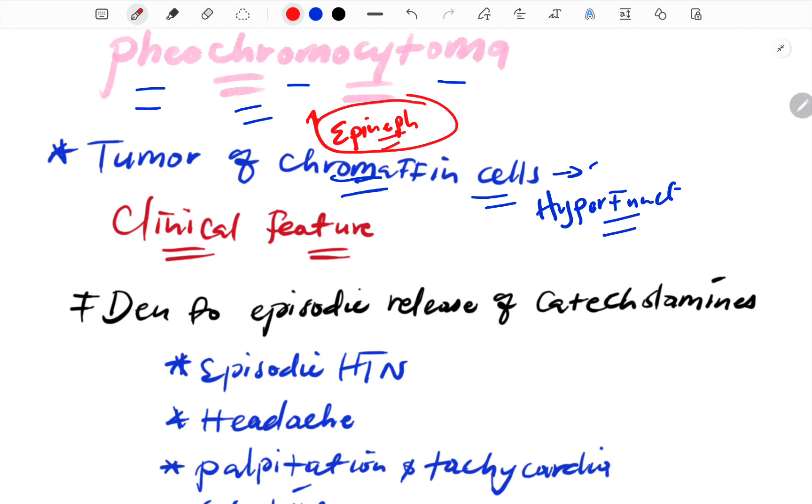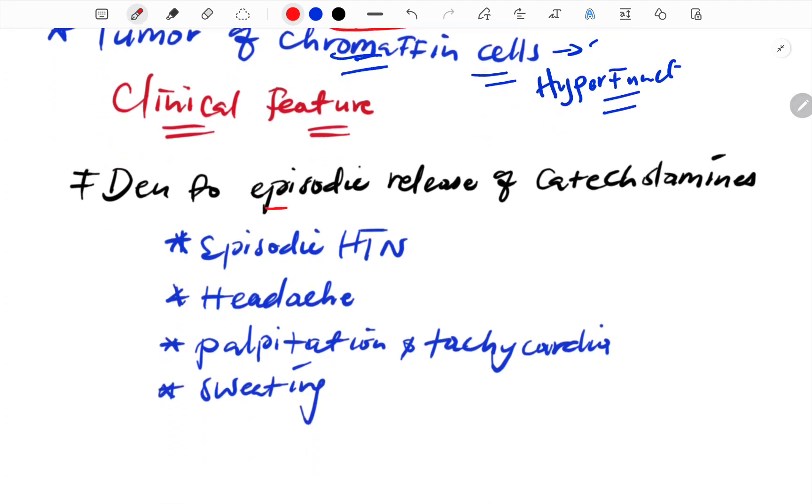The problem with pheochromocytoma is episodic release of catecholamines. It is episodic release of catecholamines that causes the symptoms.